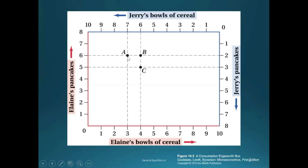A given point tells us how we're allocating these goods across the two individuals. If we move from allocation A to allocation B, the number of pancakes each of them has remains the same, but Jerry is getting one less bowl of cereal and Elaine is getting one more bowl of cereal. The key point is that a given point on this graph represents the allocation of both goods to both individuals.